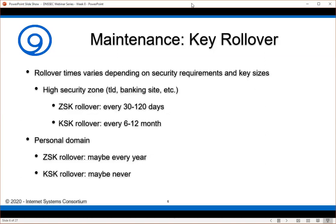The rollover times of your keys depend on your security requirements and the sizes of your keys. The sizes of the keys deal a lot more with the RSA mechanisms where you actually specify a key length. With some of the new elliptical curve algorithms, you do not supply a key length. Therefore it's just the algorithm you're using that determines how long between key rollovers. If you are a high security zone — for example, a TLD, a banking site, military, or other forms of government — then you probably want to be a little bit more aggressive in your key rollovers. For the zone signing key, every 30 to 120 days.